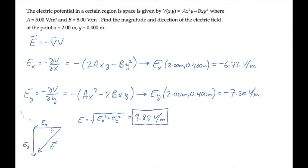To find the direction of this field, we'll first find the angle phi, which is the inverse tangent of the opposite side over the adjacent side. Phi turns out to be 47.0 degrees.